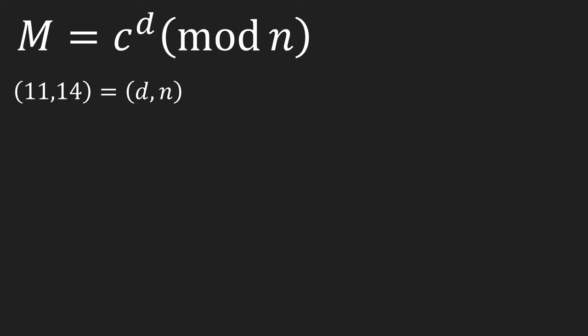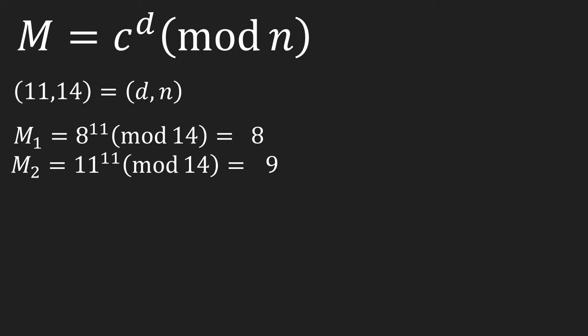To decrypt it, we would use our decryption key d equals 11. These values would be inserted into the equation c to the power of d mod n, where c is the ciphertext. If we calculate this, we obtain our original result, 8 and 9. So, hi!